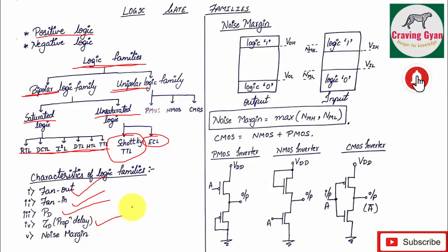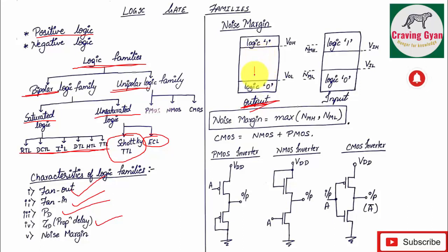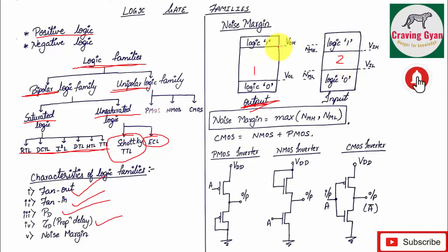Noise margin can be defined as follows: suppose one circuit is driving another circuit. The output of the first stage drives the second stage — that is, the output of the first gate is given to the input of the second gate. VOH greater than VIH will be treated as logic 1.